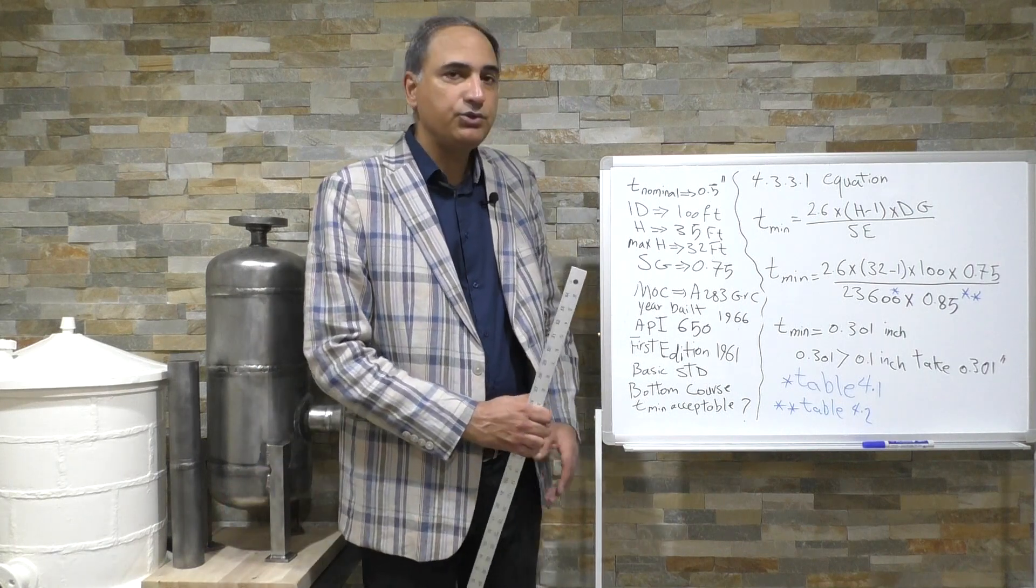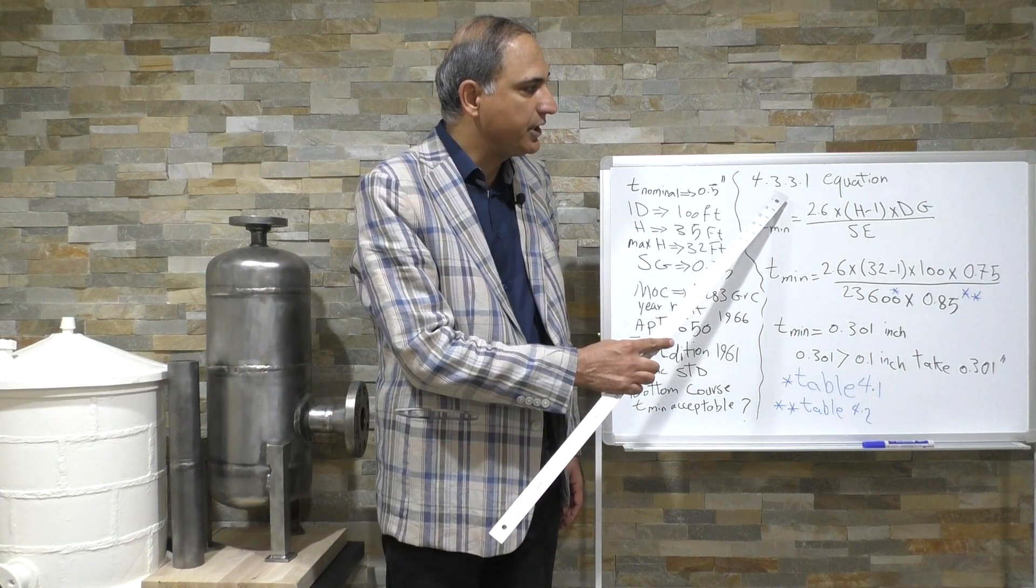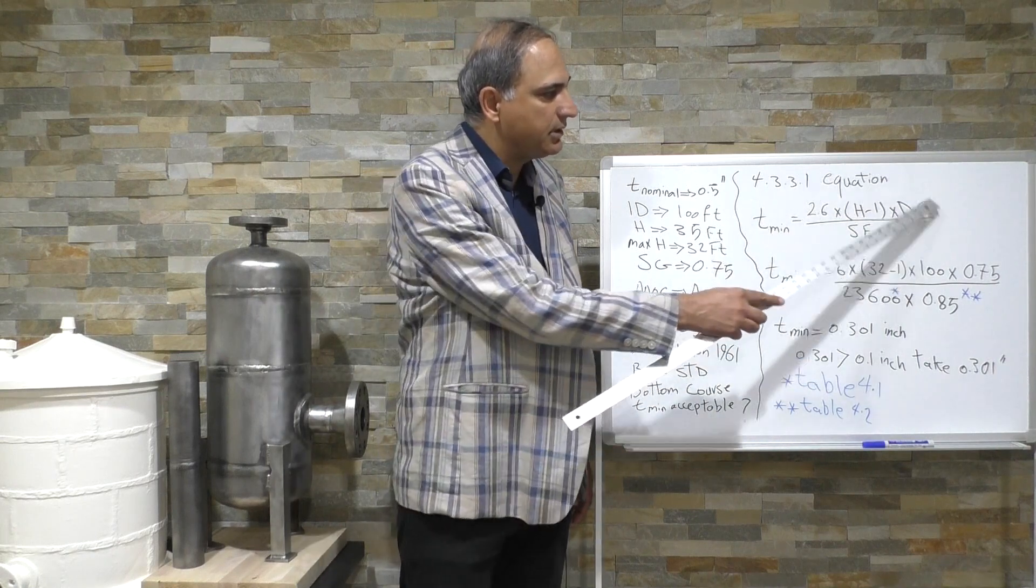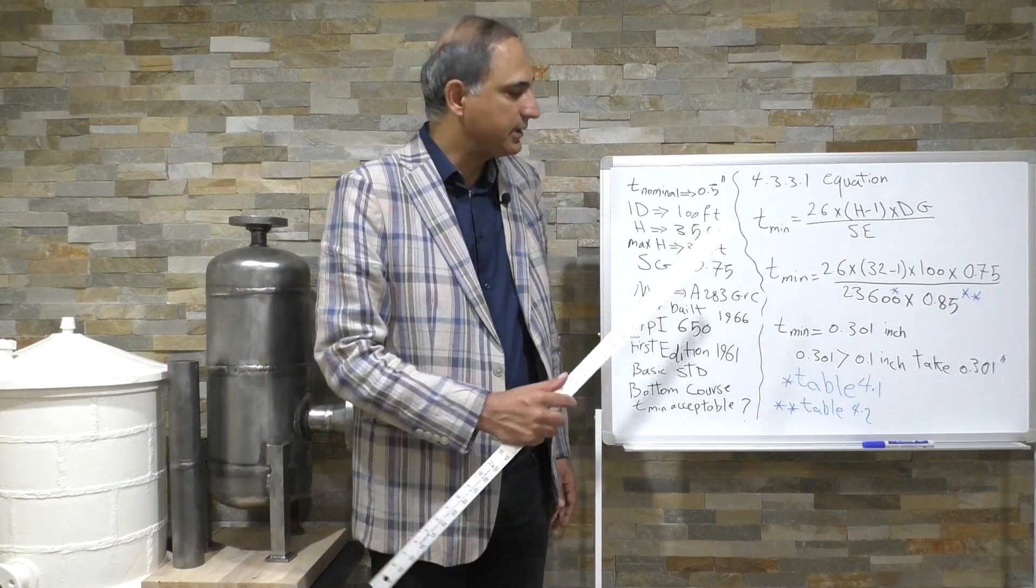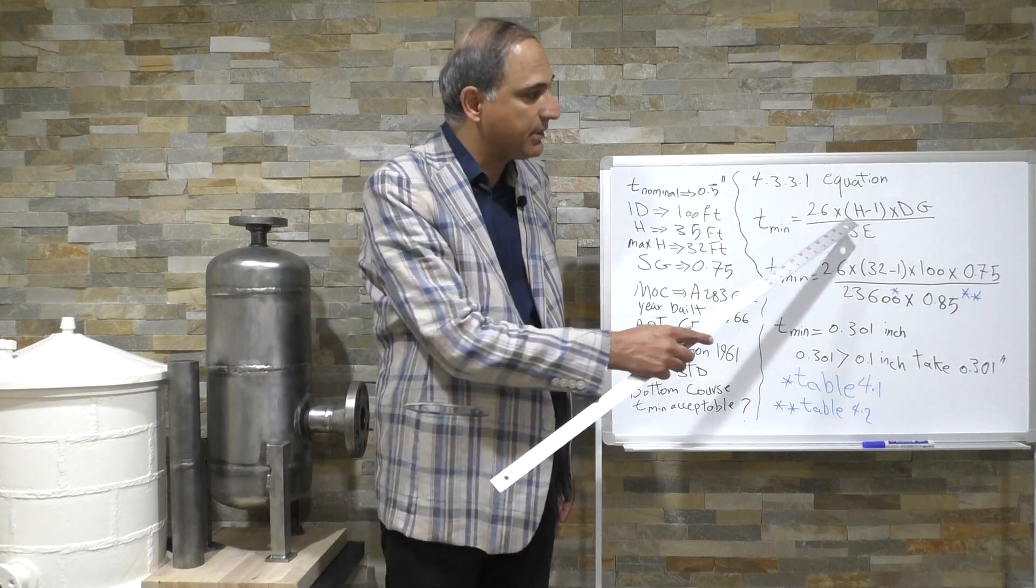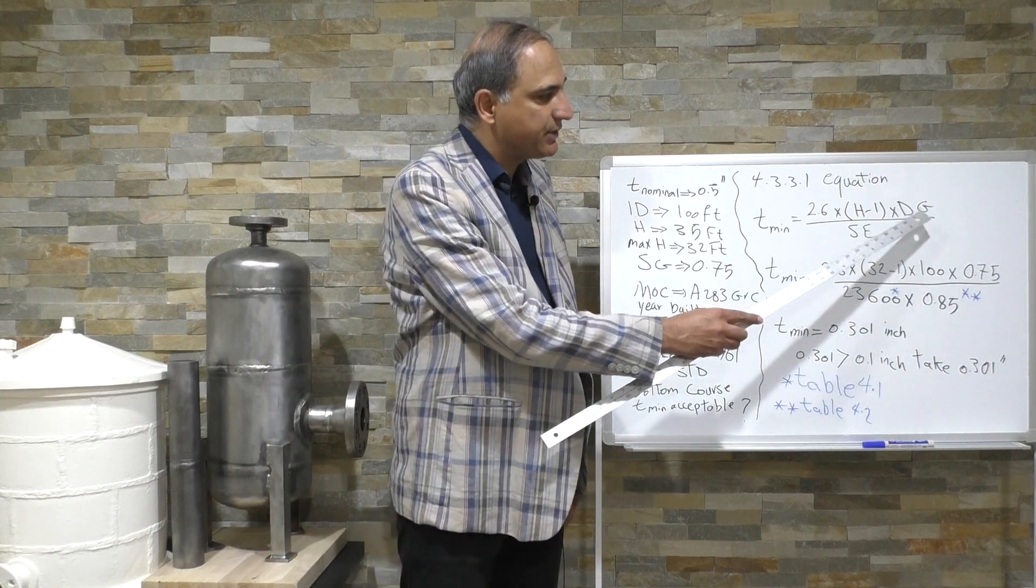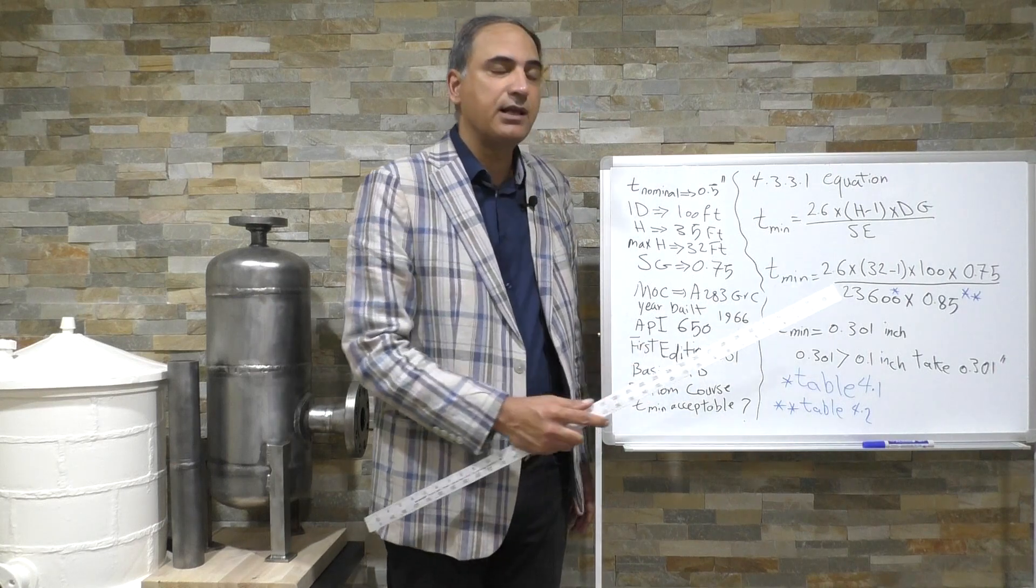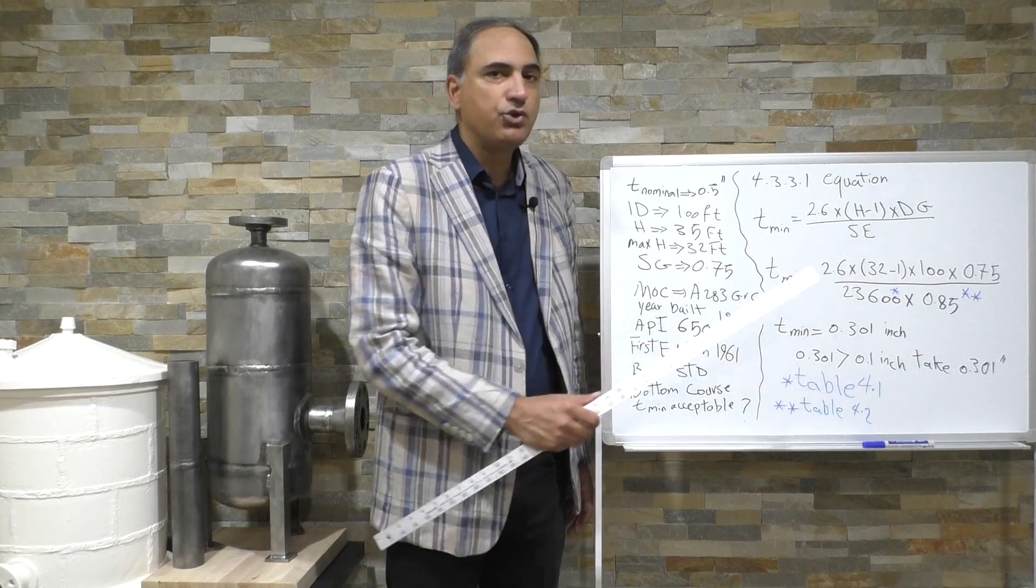So we're going to go to section 4.3.3.1 and find this equation that you can see in here: 2.6 times H which is a height, and if the problem gives us the maximum liquid level you should consider it as maximum liquid level. D is inside diameter and G is specific gravity, and in the denominator we have S which is maximum allowable stress value and E is joint efficiency.